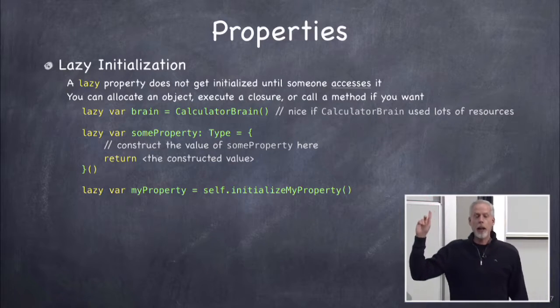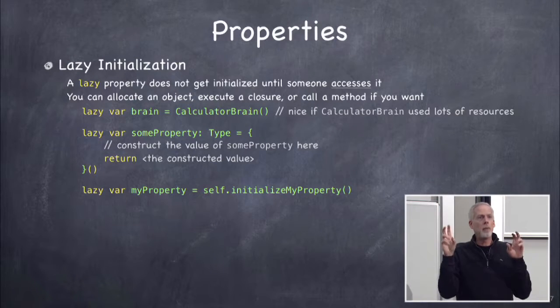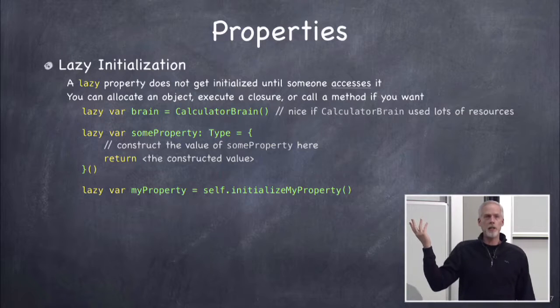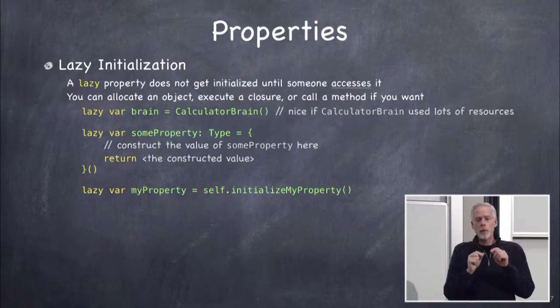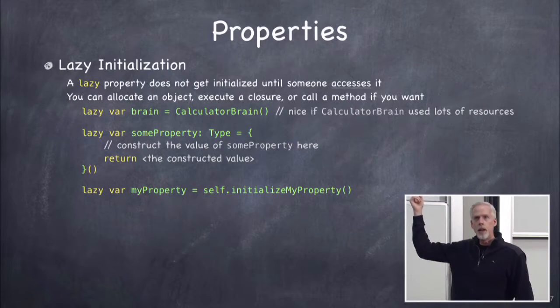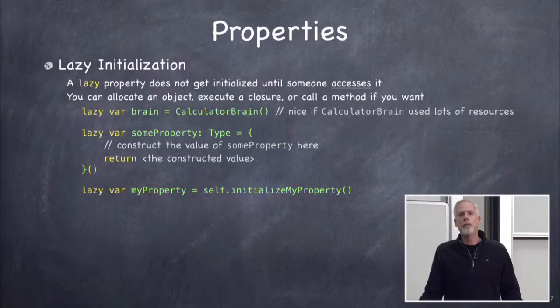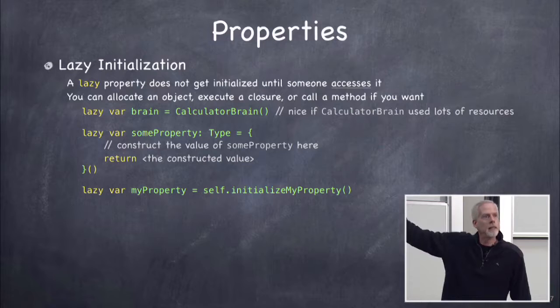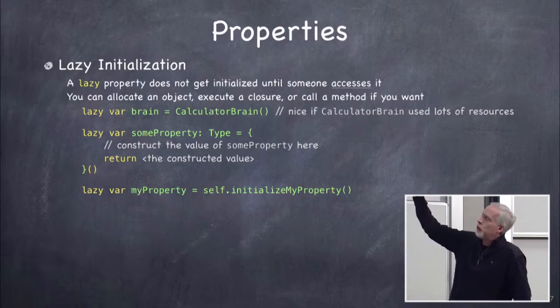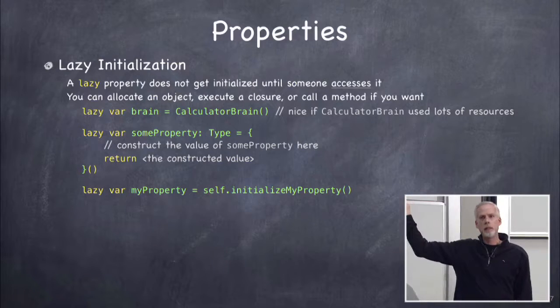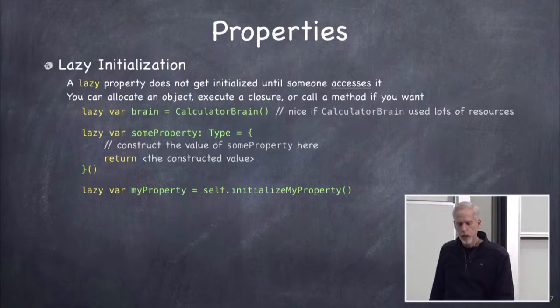You can even use a closure to initialize lazily: lazy var someProperty = { /* code returning the right type */ }(). The trailing parentheses mean 'execute this closure right now,' but since it's lazy, it actually executes later. That closure can safely reference self, because self will be fully initialized by the time it runs. Lazy will get you out of tricky initialization situations, since initialization in Swift can be complex and you'll want to avoid it.